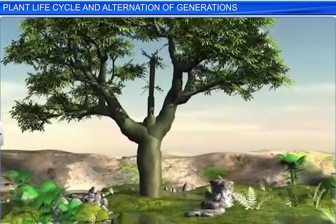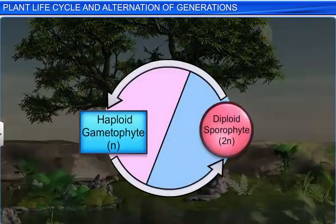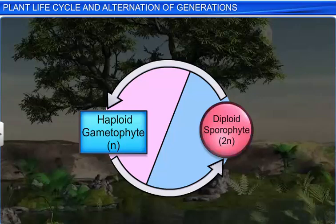Thus, every plant life cycle is marked by alternation of the sporophytic with the gametophytic phase. However, the dominant phase differs in different plant groups.